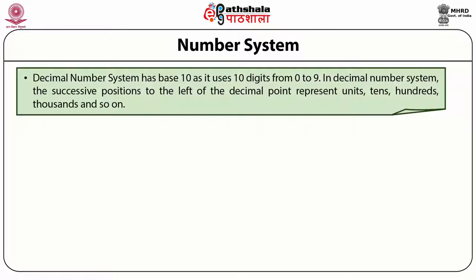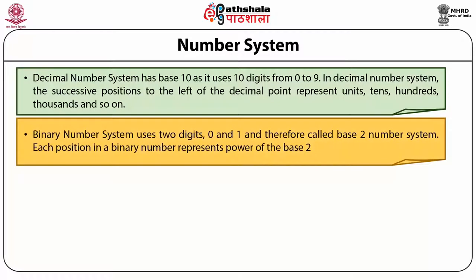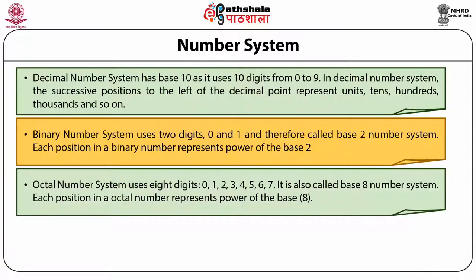Decimal number system has base 10 as it uses 10 digits from 0 to 9. In the decimal number system, the successive positions to the left of the decimal point represent units, 10s, 100s, 1000s and so on. The binary number system uses just two digits, 0 and 1, and therefore it is called the base 2 number system. Each position in the binary number represents a power of base 2. Another number system is the octal number system, which uses 8 digits — that is 0 to 7 — and is also called the base 8 number system.